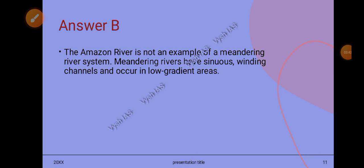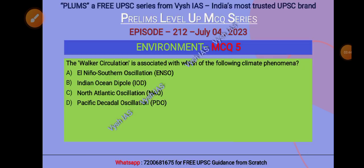The fifth and final MCQ: the Walker Circulation is associated with which one of the following climatic phenomena? Options are: A) El Niño-Southern Oscillation (ENSO), B) Indian Ocean Dipole (IOD), C) North Atlantic Oscillation (NAO),